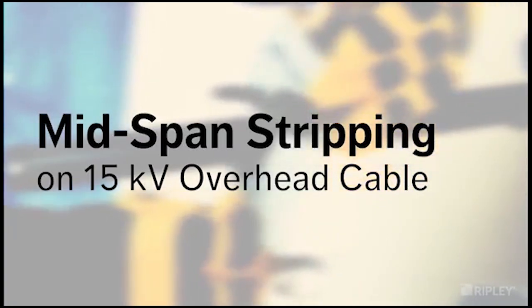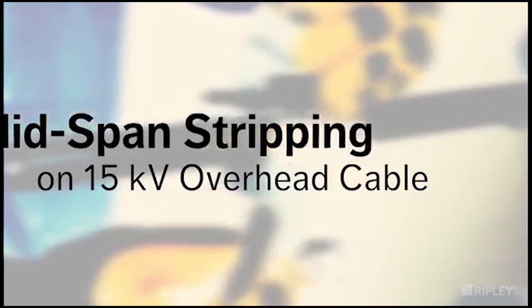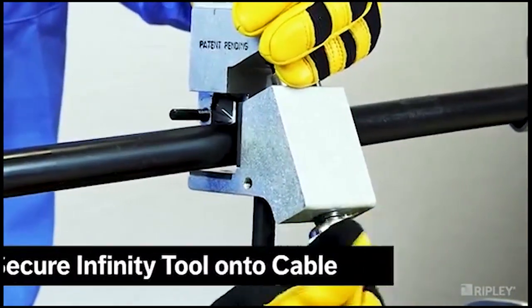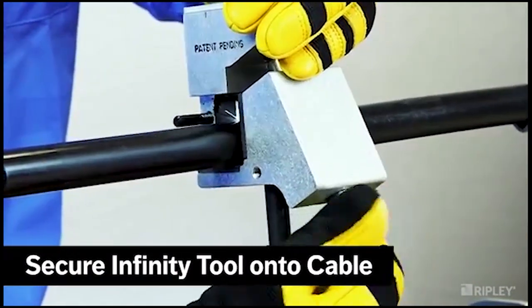To begin stripping the insulation from the mid-span on 15 kV overhead cables, secure the Infinity around the mid-span where the strip length has been marked.